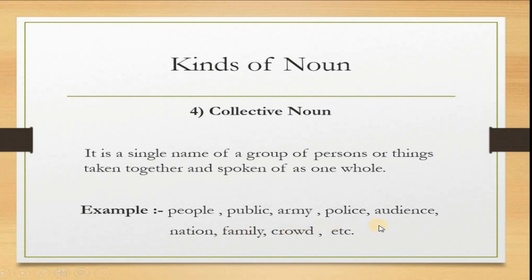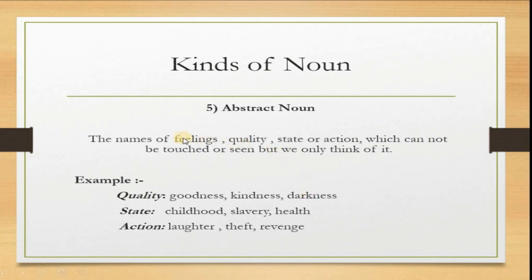The next kind of noun is abstract noun. An abstract noun is the name of feelings, quality, state or action which cannot be touched or seen but we only think of it. For example: quality.